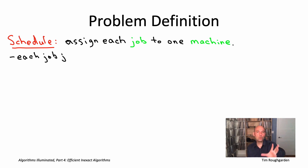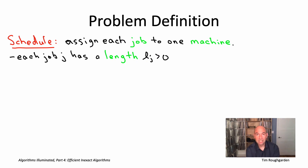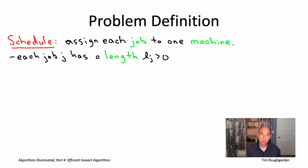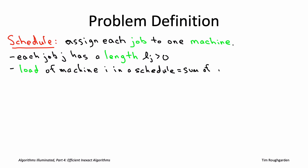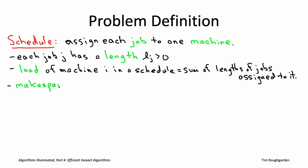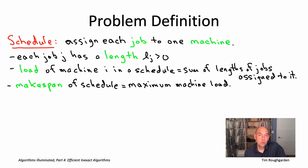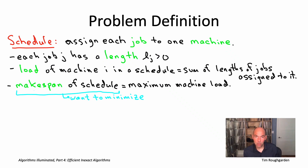There are a lot of different schedules we could implement, so which one should we prefer? We're going to assume that different jobs have different lengths — we'll denote the length of job j by l sub j. We're going to focus on the objective of assigning jobs so that they all complete as quickly as possible. To formalize this, we need a precise objective function. First, the load of a machine is the sum of the lengths of the jobs assigned to it. We're interested in the largest of the machine loads — the most heavily loaded machine — and that's known as the makespan of a schedule, which is exactly what we want to minimize.